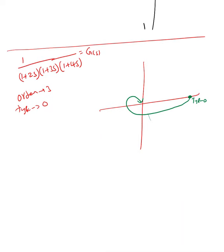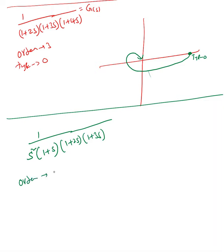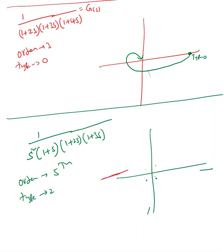The next example: 1 over s-squared times (1+s)(1+2s)(1+3s). How many poles are there? Five — so it's a fifth-order system, and the type is two. Type two gives you the starting point — this is type zero, type one, type two — so it starts from there. Fifth order: first, second, third, fourth, fifth — the graph ends there and is going to look something like this.